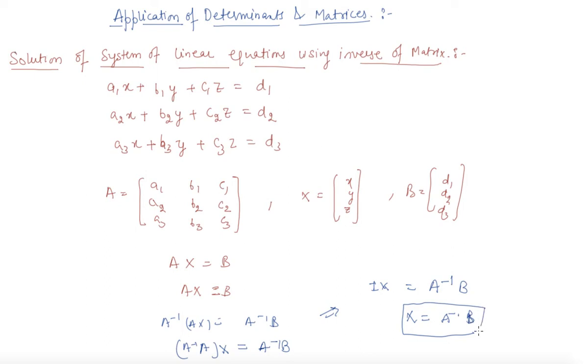From here, X is coming out to be A inverse B. As we all know, the value of B means d1, d2, d3 and taking the A inverse, we can find out the value of X.